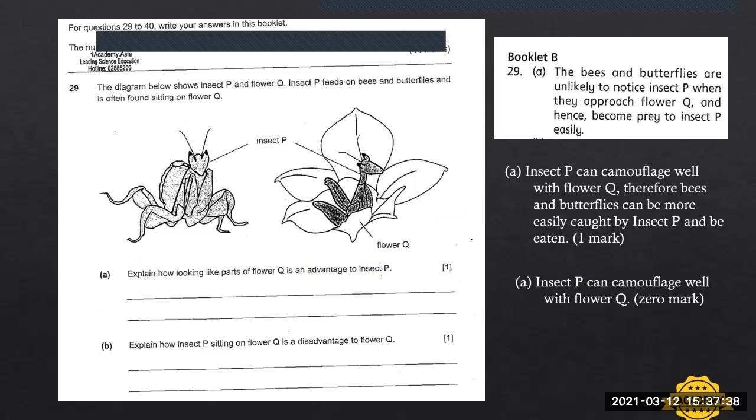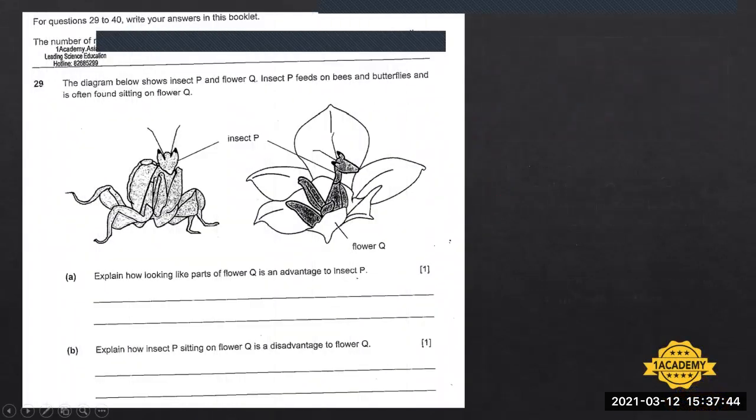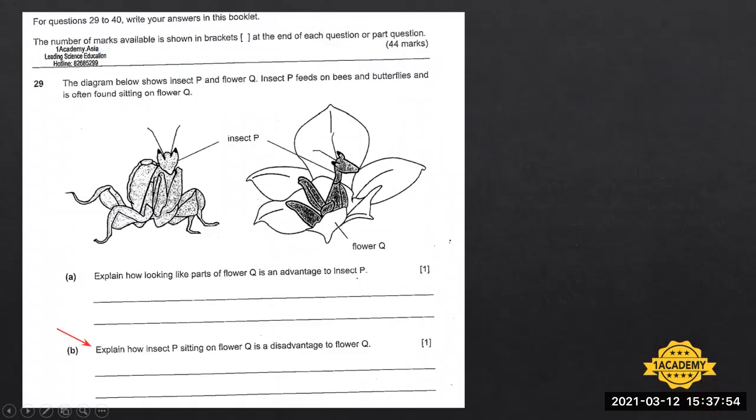Let's proceed with the next question. In part B, it's the same question. Students are required to explain how insect P, this insect, sitting on flower Q is a disadvantage. So we have changed from advantage to disadvantage. Now it's a disadvantage to flower Q. So in other words, the student needs to explain how this insect, which is the praying mantis, by sitting on flower Q, becomes a disadvantage to flower Q.